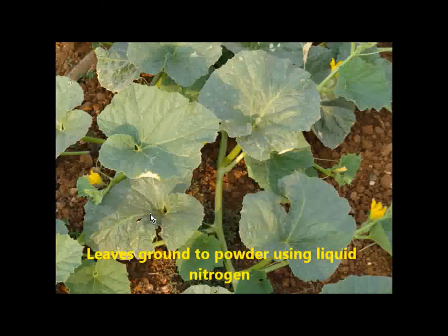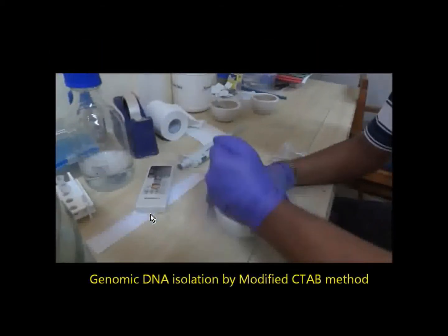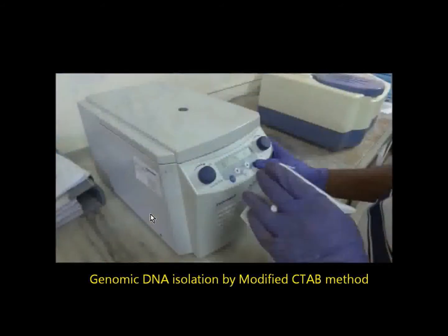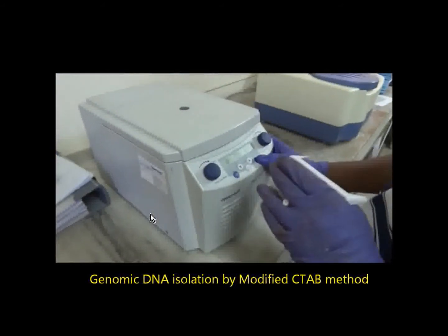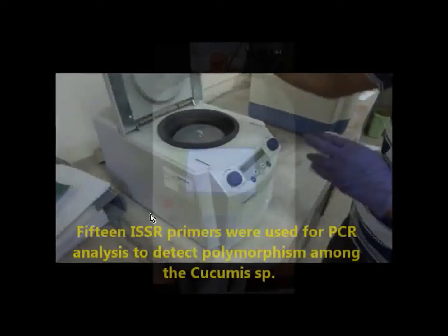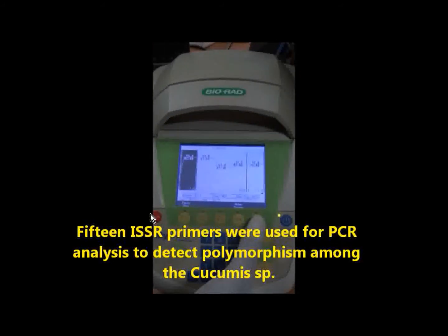The leaves are ground to powder using liquid nitrogen in microfuge tubes and then the genomic DNA were isolated using modified CTAB method. Fifteen ISSR primers were used for PCR analysis to detect polymorphism among the Cucumus species. These are the UBC primers from University of British Columbia.